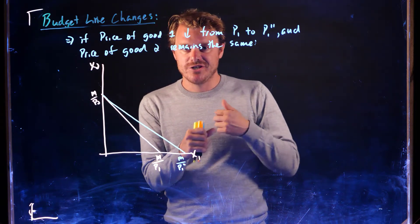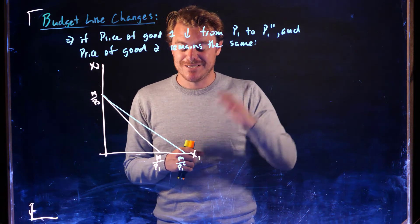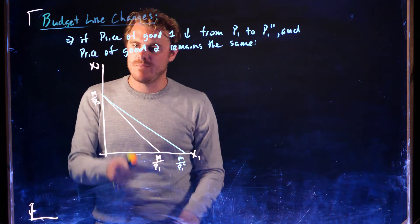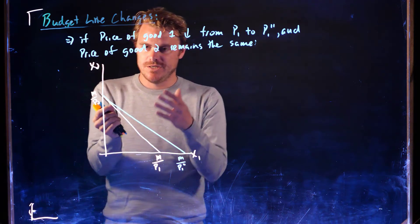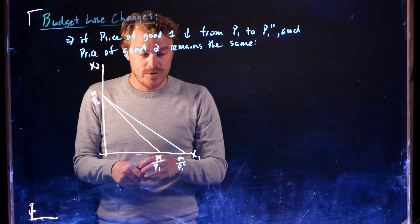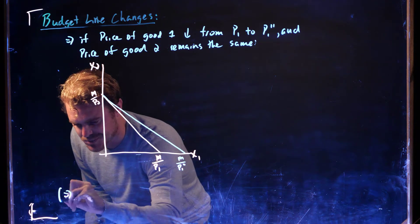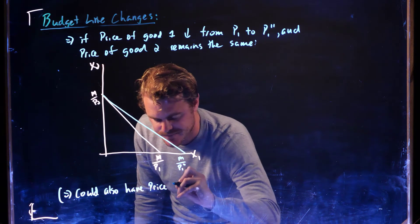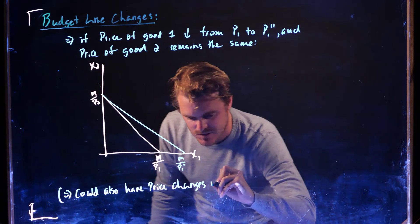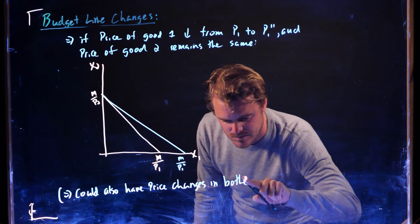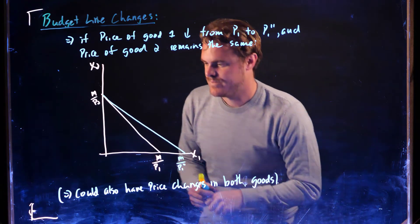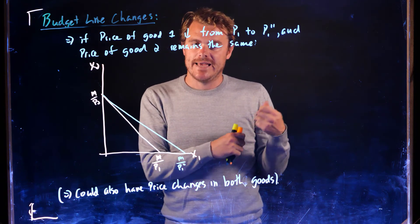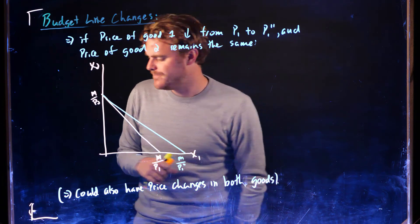We've now covered income changes — those are parallel shifts in or out — and price changes, which rotate the budget line. We concentrated on changing the price of good 1, but you could also change the price of good 2 using the same logic to shift that intercept. We could also have price changes in both goods simultaneously. Now let's move on and quickly talk about numeraire goods and how we can always express things in relative terms.